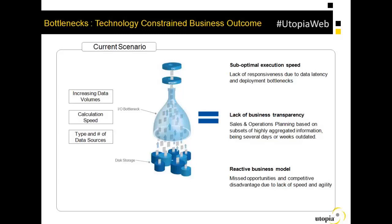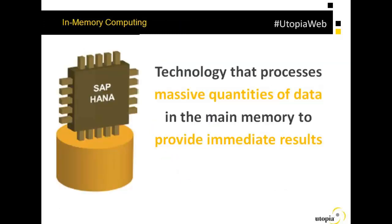That is where SAP HANA came into picture and it started working wonders for clients. As SAP talks about HANA as a new game changer, let's see why it's so-called. SAP HANA in a nutshell is something very much like in-memory computing — a technology which can process massive loads of data in the main memory of a CPU and provide immediate results in a flash. This is a concept SAP had in mind when they wanted to create SAP HANA.